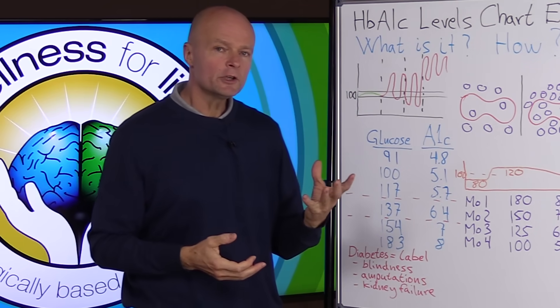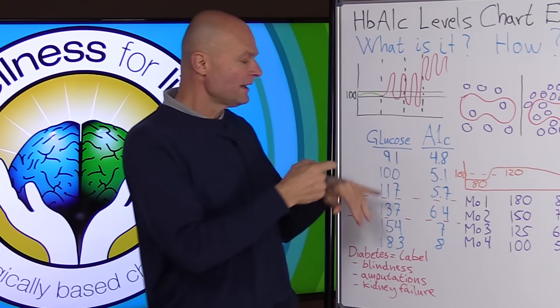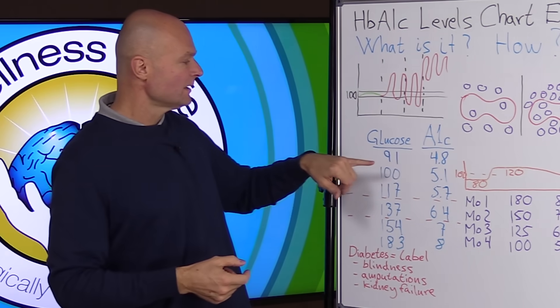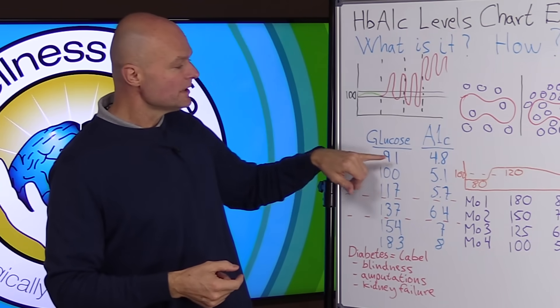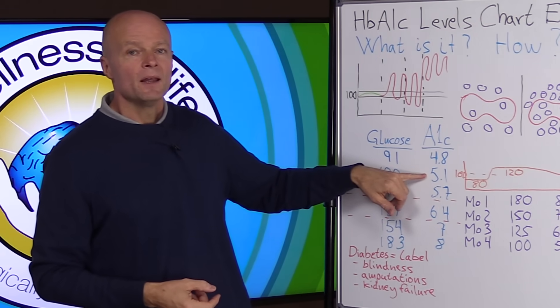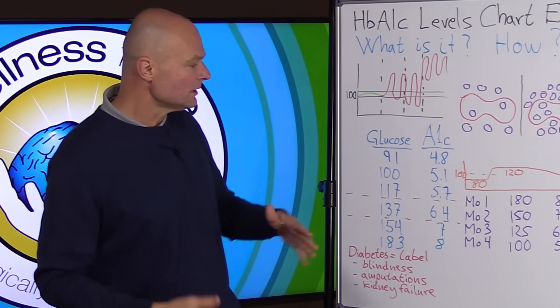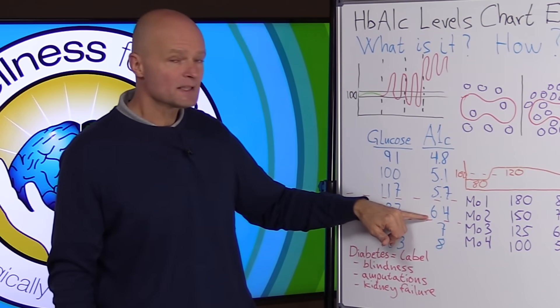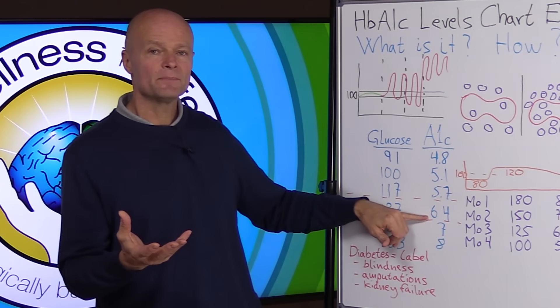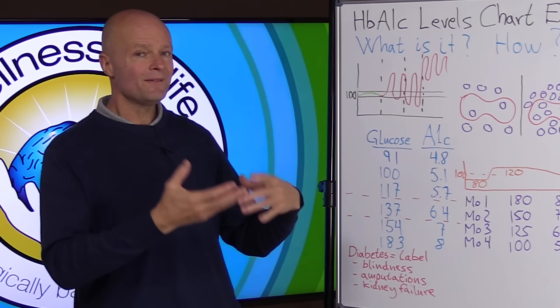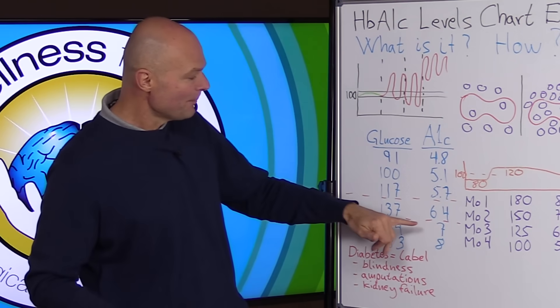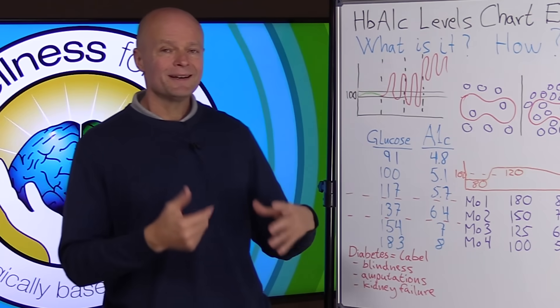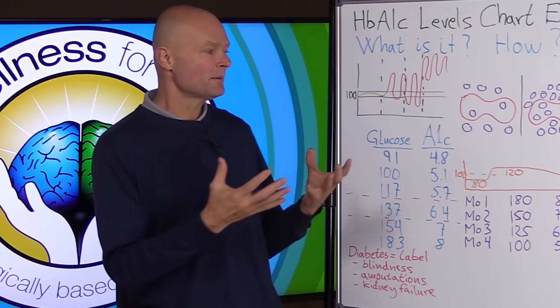So now we can create a chart and we can figure out we know that an average glucose of 91 is equivalent to an A1c of 4.8. Average glucose of 100 is equivalent to a 5.1 and so on. And they have defined normal as being anything up to a 5.7, between 5.7 and 6.4 is pre-diabetes. That means that you don't have diabetes yet but you're probably going to get it and above 6.4 or 6.5 and up is called diabetes.